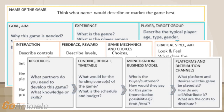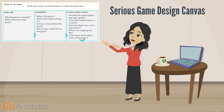The bottom part of the canvas is the business part. Who are actually creating the game? Where do you get the funds to create the game? How do you make money? Where is it published? In the canvas you break down the game design into understandable elements.